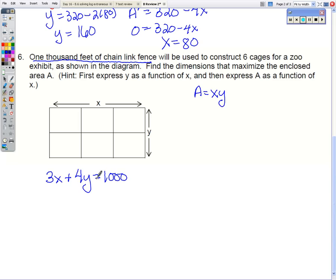So first I'm going to solve this for y. So I'm going to move the 3x. And then divide every term by 4. So 1,000 divided by 4. And then 3 fourths I'm going to leave as the fraction. Plug that into my area formula. Distribute the x.